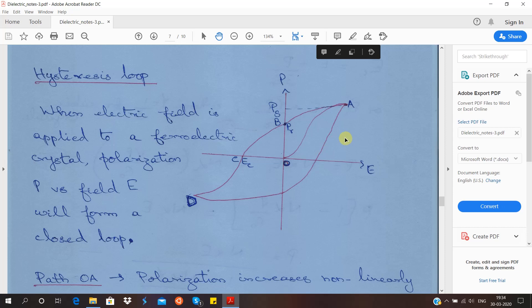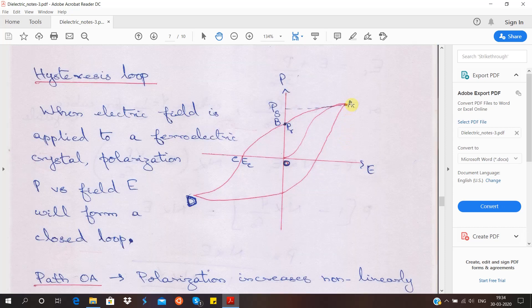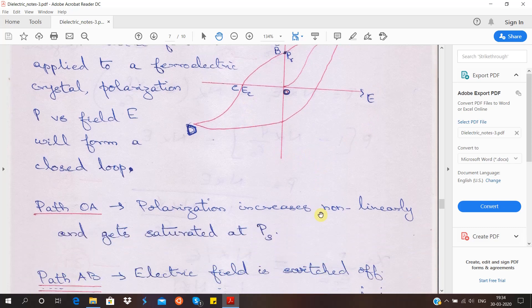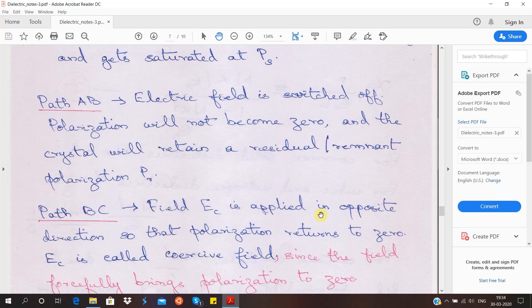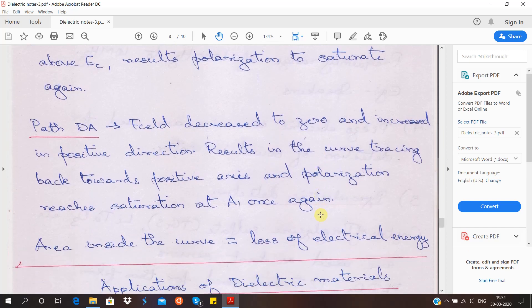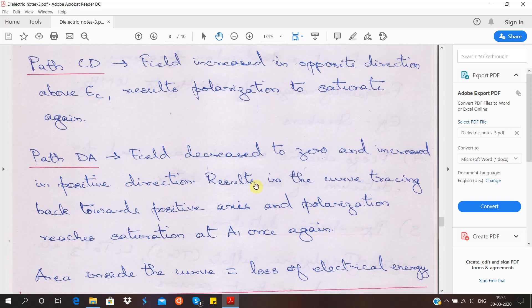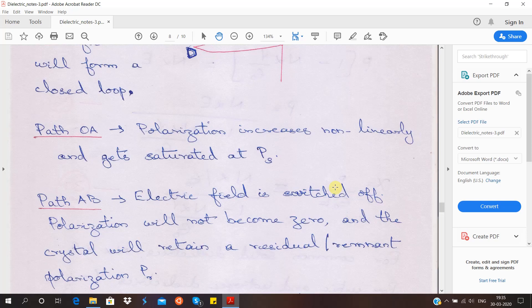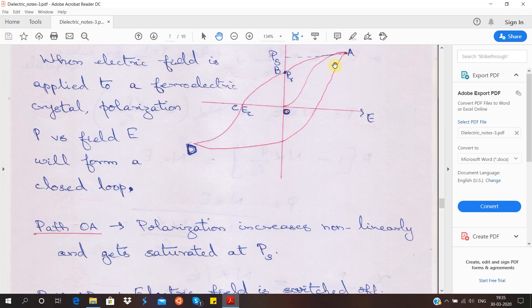Then you again try to bring it to zero forcefully by giving the coercive field in the other direction, and later it traces back to this maximum polarization. So this is the hysteresis curve for ferroelectric materials. The total area covered by this hysteresis curve is going to give the dielectric loss. How much energy has been lost is given by the total area under this curve.